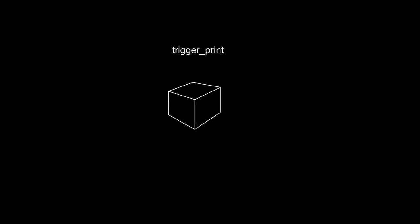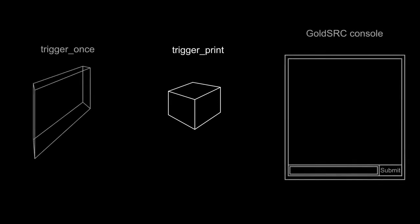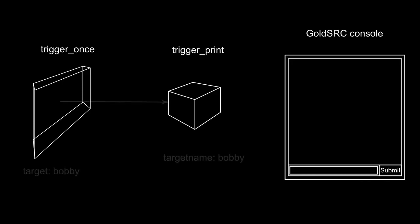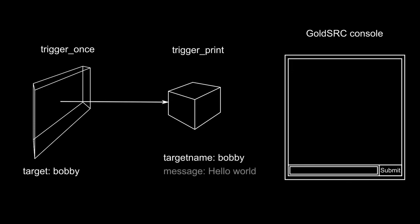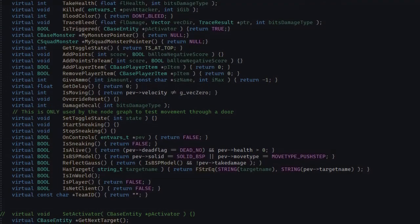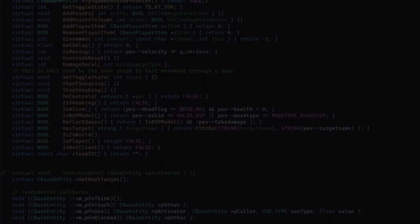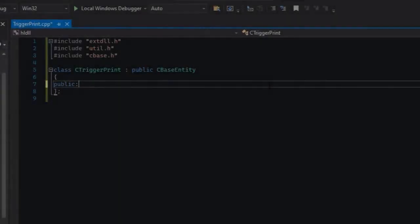It's blatantly simple, but we'll still go through the entity design the old-fashioned way. trigger_print will only have two key values: the name of the entity, which is targetname, and the text that will get printed to the console, which is message. We'll need to know this when we modify the FGD. When triggered, it'll print its message to the console — simple as that.